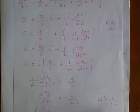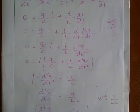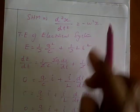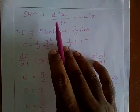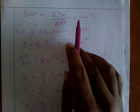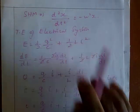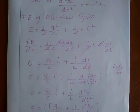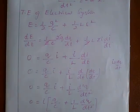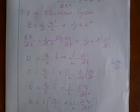This electrical system obeys simple harmonic motion. For the electrical system: d²Q/dt² = −ω²Q. Correspondingly, for the mechanical system: d²x/dt² = −ω²x. So this electrical system is also a simple harmonic system.